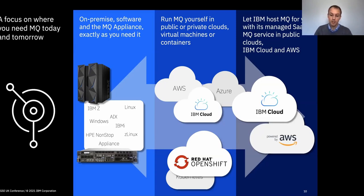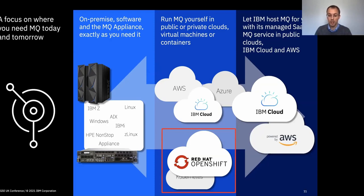You can use the IBM managed service where IBM will host your queue managers for you, either in the IBM cloud or in AWS. Red Hat OpenShift is one of IBM's strategic platforms, and this is really where we're looking to provide lots of support for ensuring that you can deploy MQ in a seamless and well-managed way.